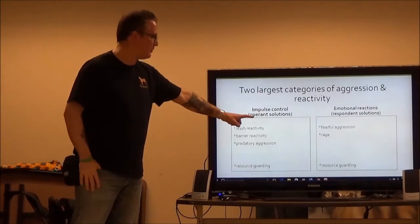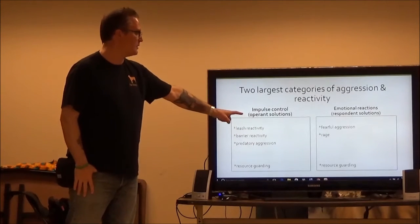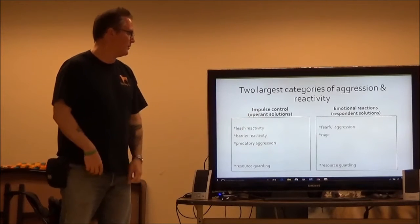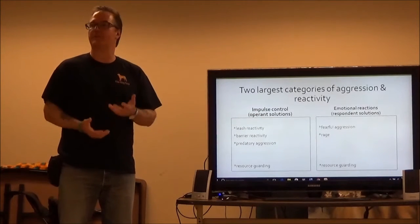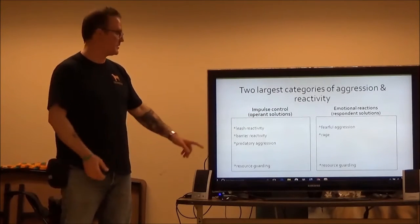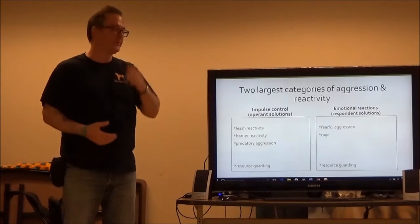The two big categories have to do with impulse control. This word operant refers to history of reinforcement and punishment, so stuff that's happening on the forefront of the brain up here.